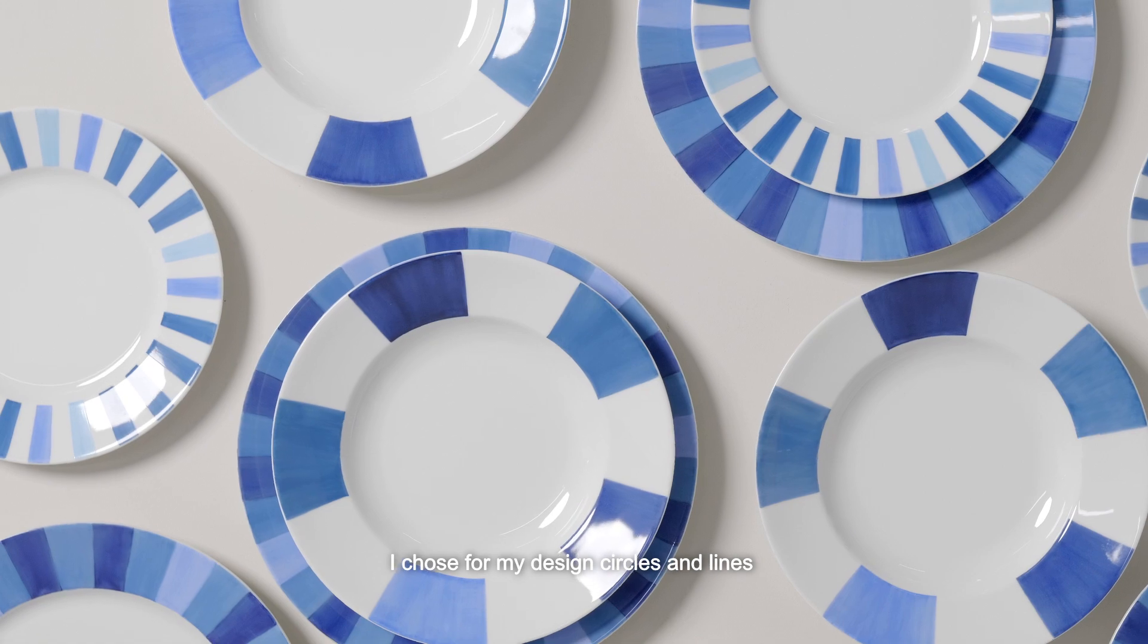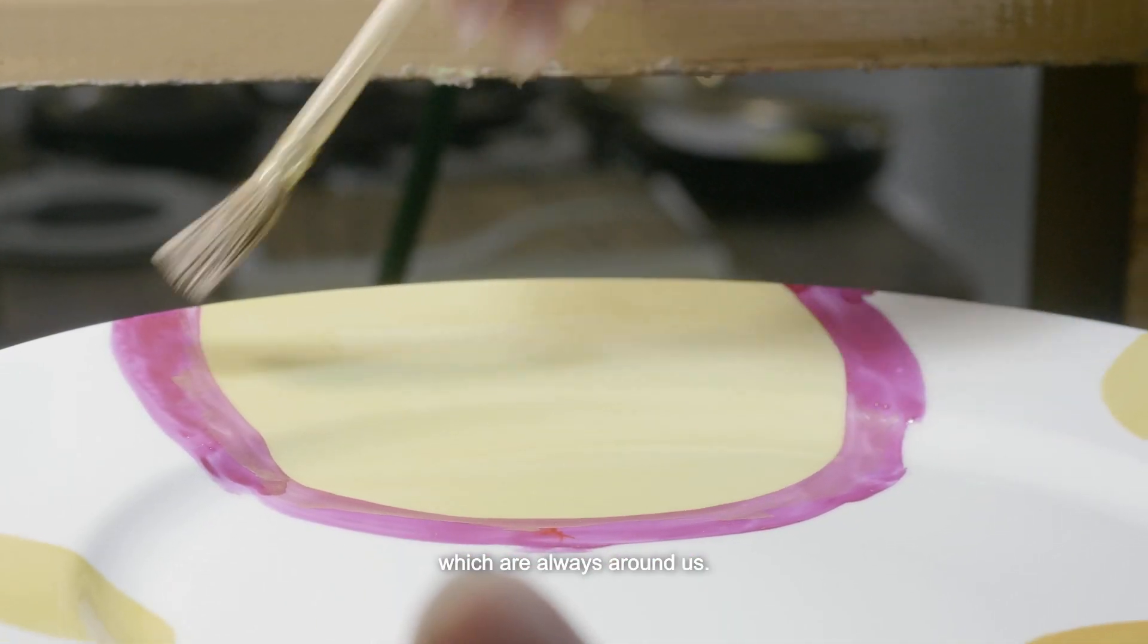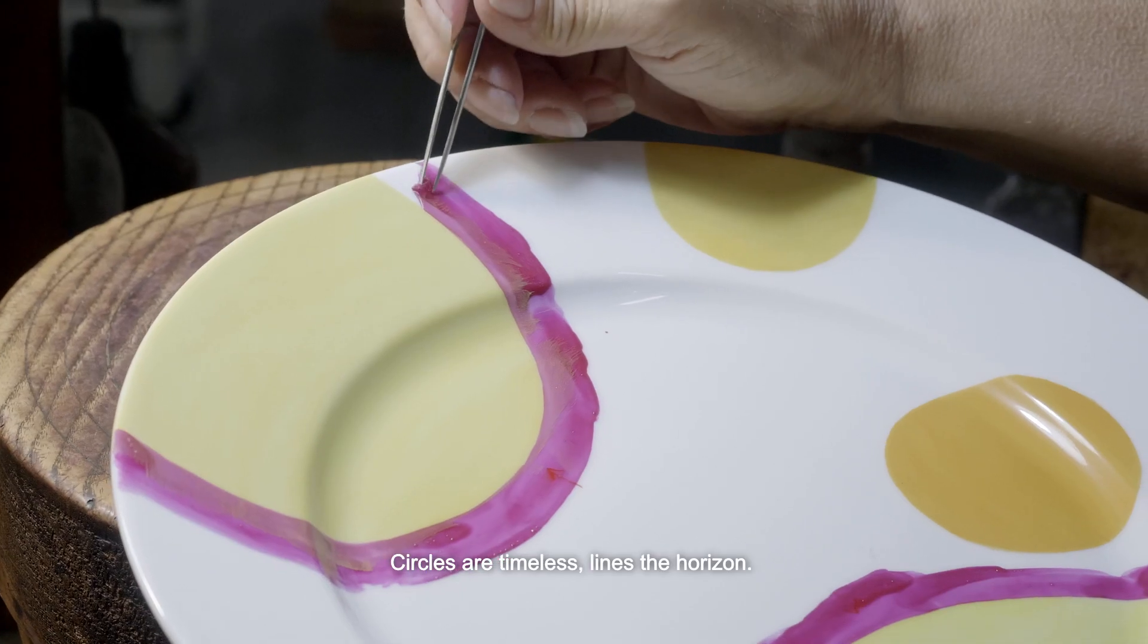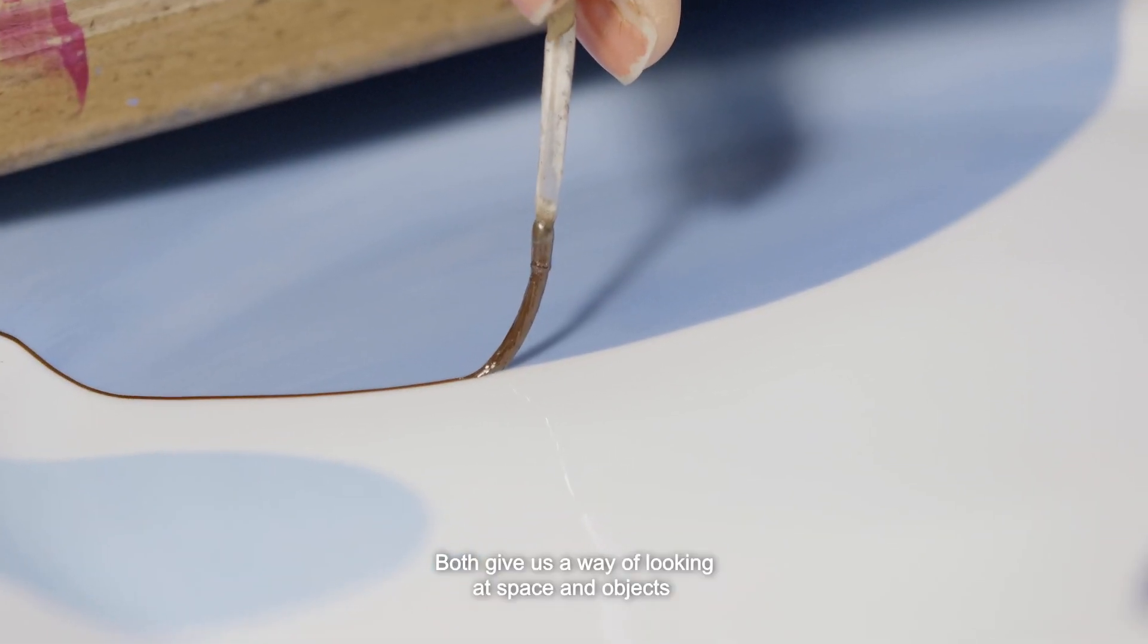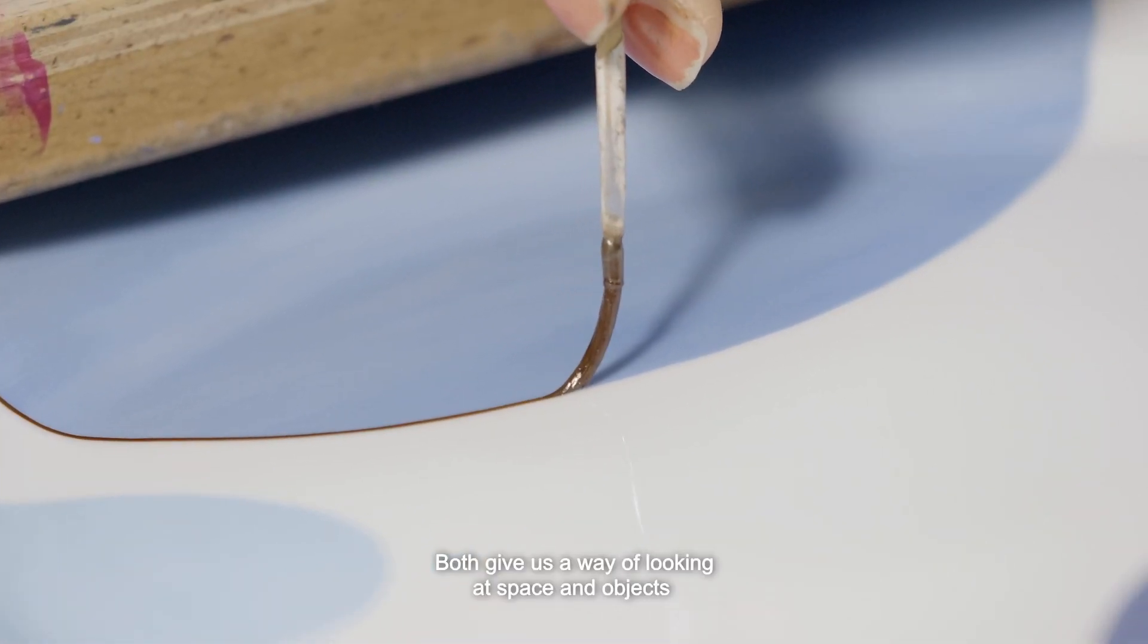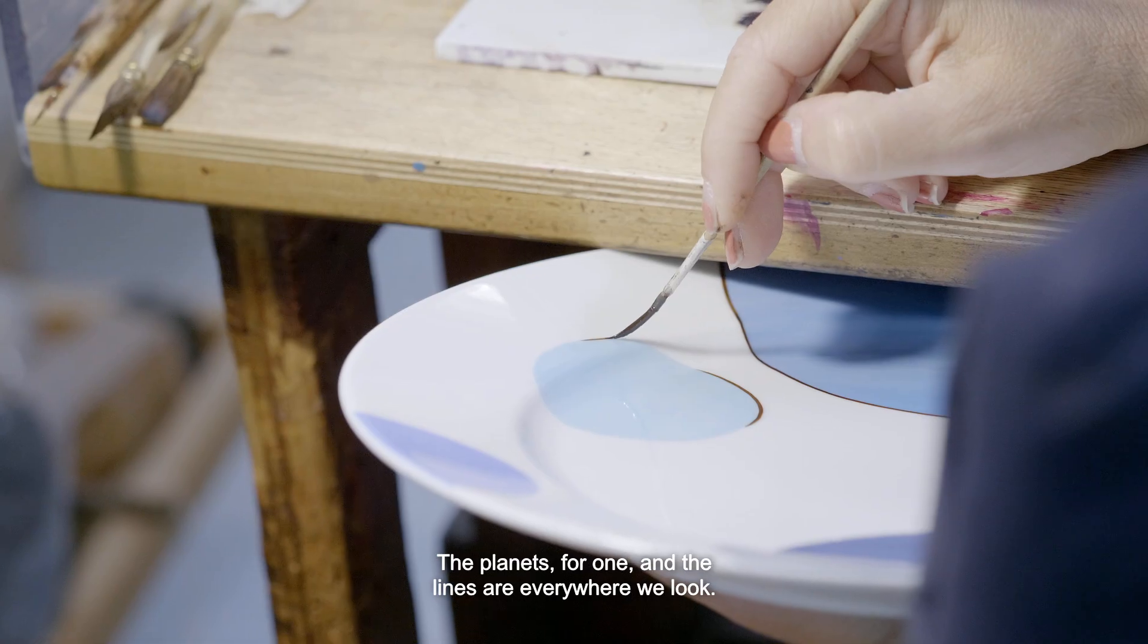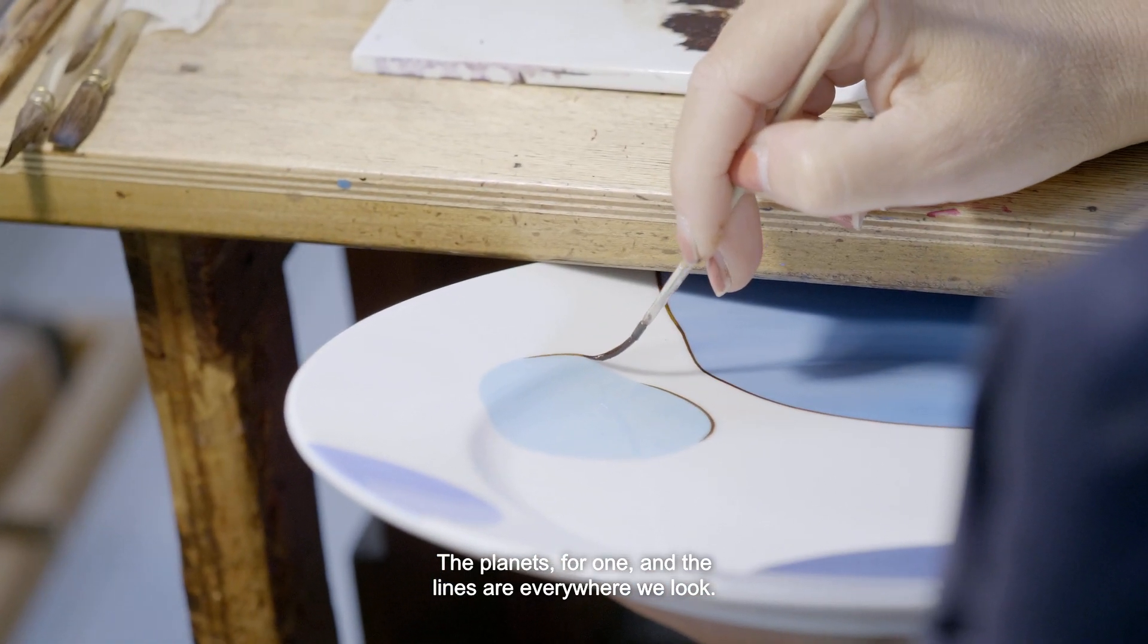I chose for my designs circles and lines which are always around us. Circles are timeless, lines the horizon. Both give us a way of looking at space and objects constantly moving or evolving. The planets, for one, and the lines are everywhere we look.